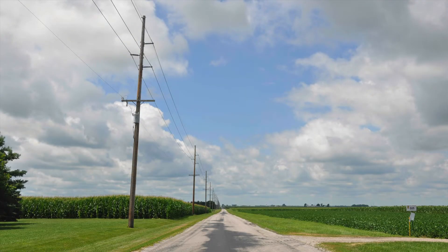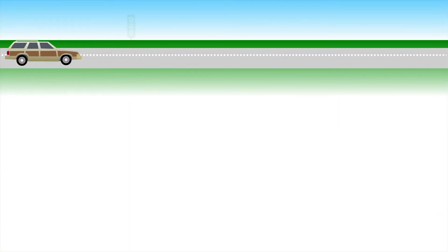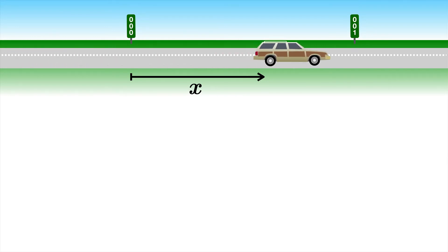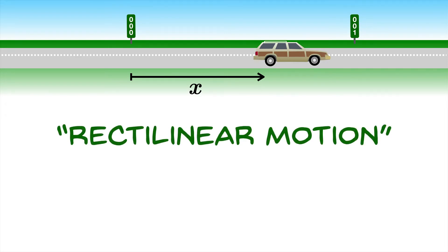Imagine that you're traveling down a long, straight road. On this road you have position marked off along the way, so you might have mile markers on a country road. We could let X denote your position along the road, and we'll start at marker zero for the origin. As we move to the right we'll increase the value of X. You can imagine moving along the road either to the right or the left — this is an example of what we'll call rectilinear motion.